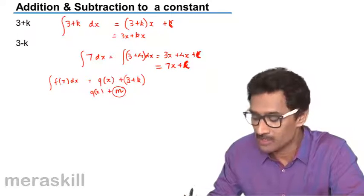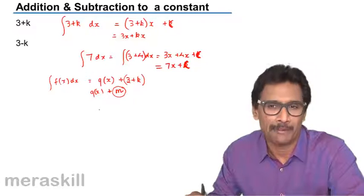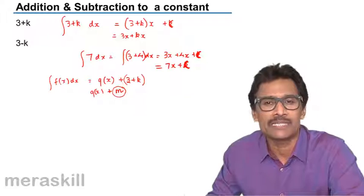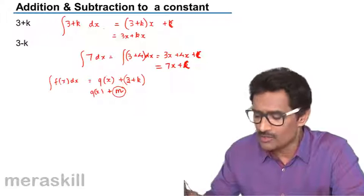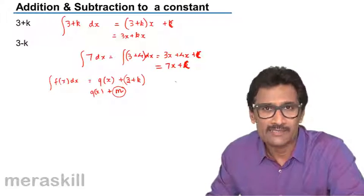Because 3 plus k itself can be called m, so it's going to be g of x plus m. Same way in case of 3 minus k also can be written as m. So as we do examples, we will be clearer about these things.